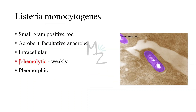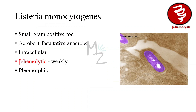Listeria monocytogenes is a small gram-positive rod. It is an aerobe, but it can be a facultative anaerobe. It is intracellular. It is weakly beta-hemolytic, which means that it will form a small clear zone on blood agar. It is pleomorphic — pleo means many and morph is for shapes — meaning it occurs as rods but forms V or L-shaped formations under a microscope. That's why it is called pleomorphic.